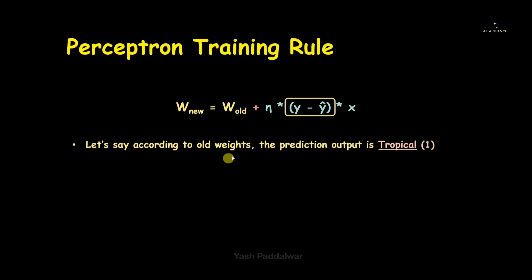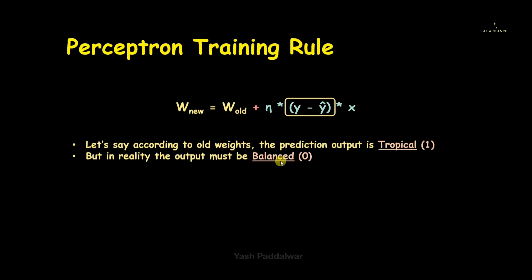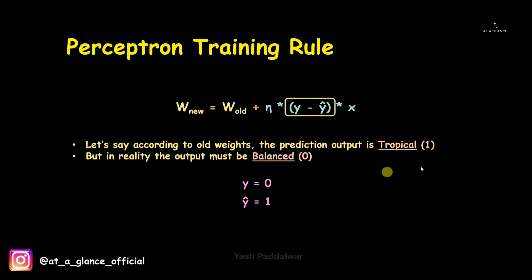Now let's look at y and y_hat. Say according to the old weights the model predicted the output is 'tropical', represented by label 1, but in reality the output should be 'balanced', whose label is 0. That's a misclassification — the model predicted 1 but should have predicted 0. So the actual output y is 0 and the predicted output y_hat is 1.